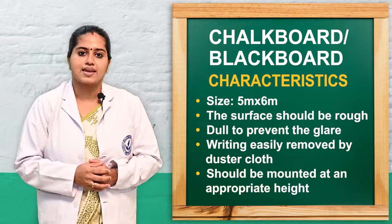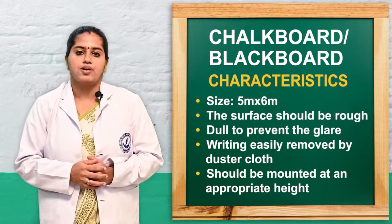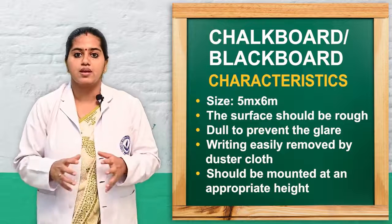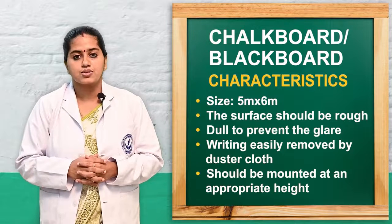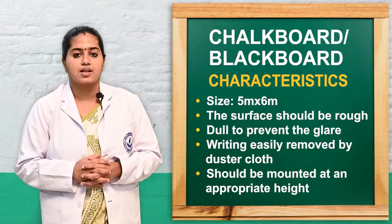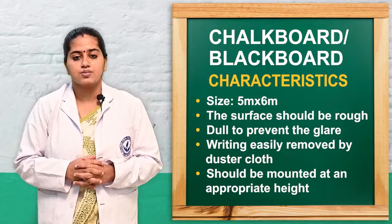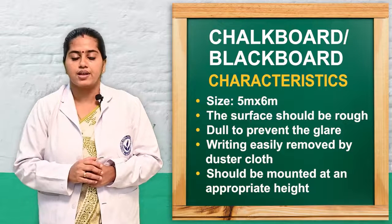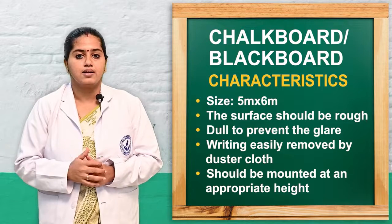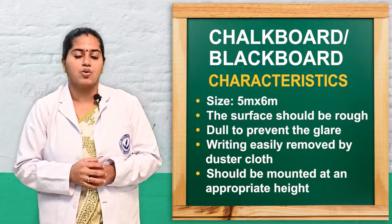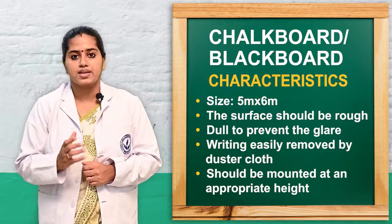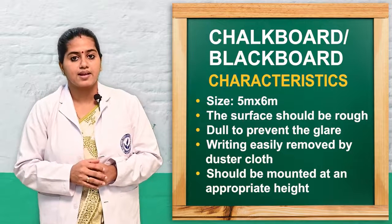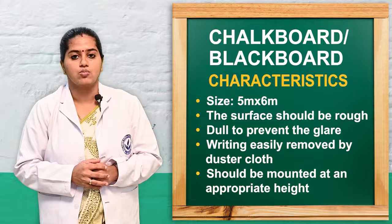Next we will see what are the characteristics of chalkboard. The chalkboard has to be made 5 meters to 6 meters. The surface has to be rough enough to write on the chalkboard. Next, it has to be dark in order to prevent the glare while writing on the chalkboard.